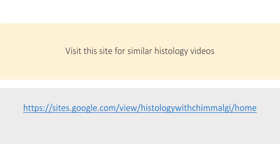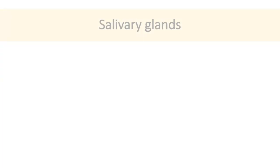Salivary glands are compound tubuloacinar exocrine glands. Their ducts drain into the oral cavity. They secrete saliva which helps in lubrication, deglutition, tasting, defense, and digestion.